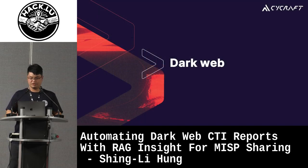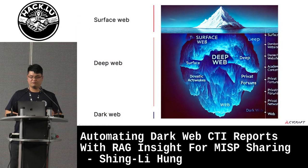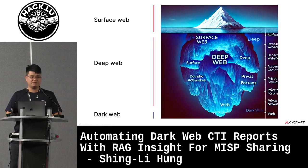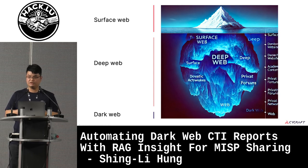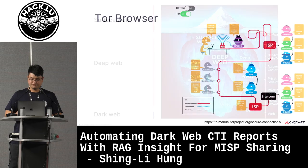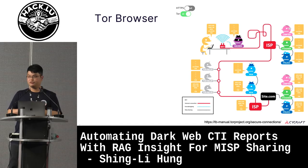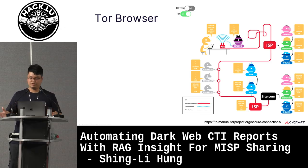Let's discuss the dark web. The surface web is what you can find using search engines. The deep web is the largest part of the network, and the dark web is just a small part of it. We use the Tor browser to communicate with the dark web — you can find the mechanism diagram on the Tor Project website.